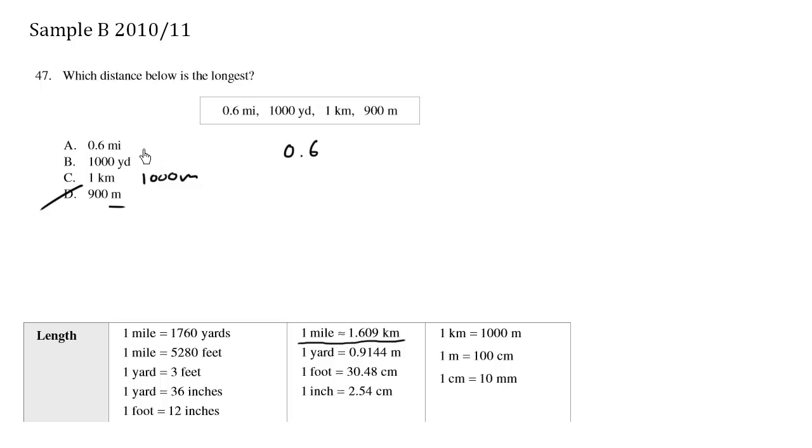Let's look at 0.6 miles from choice A. I want to multiply by 1, which is okay. We have 0.6 miles times 1, which is essentially the same numerator over the same denominator. Each mile is the same thing as 1.609 kilometers.